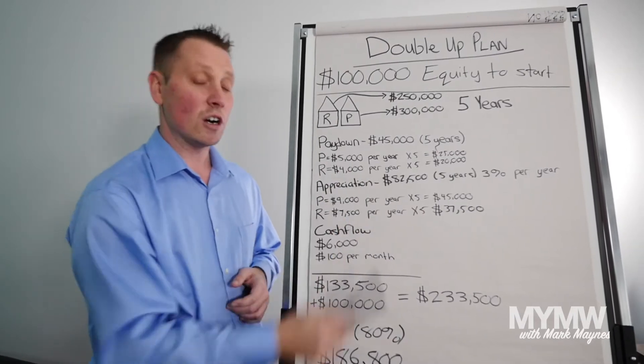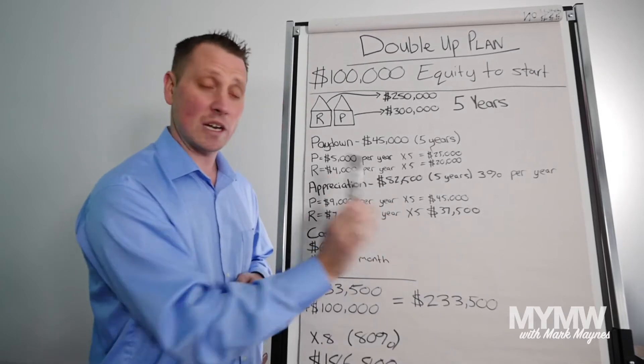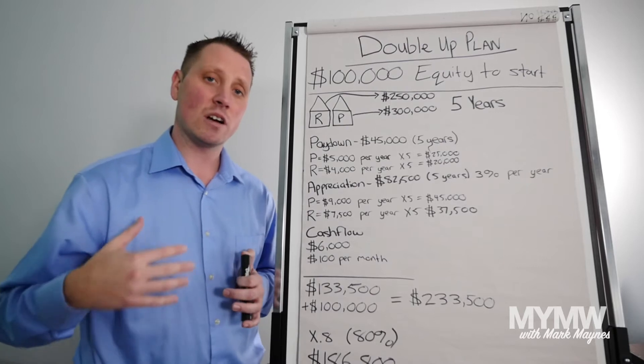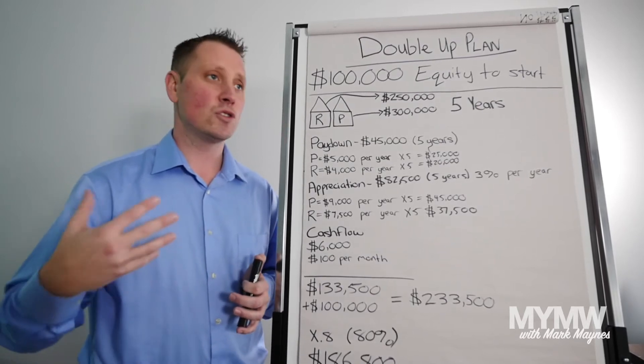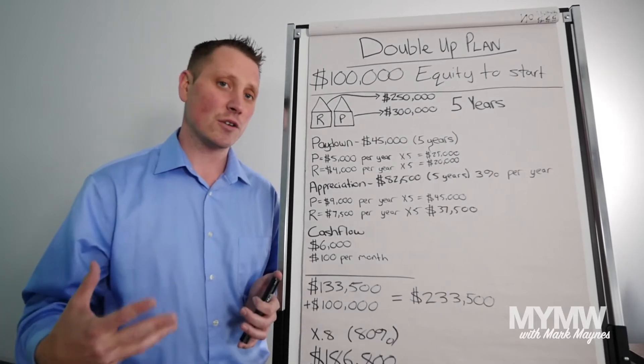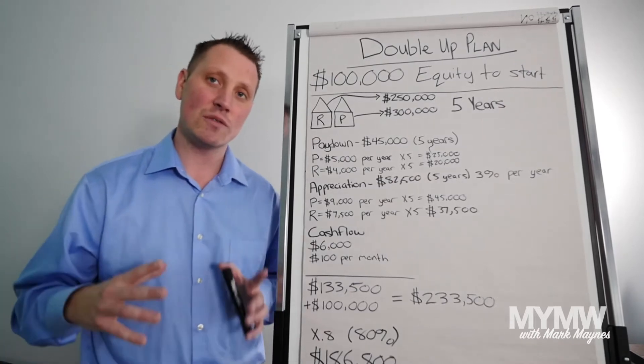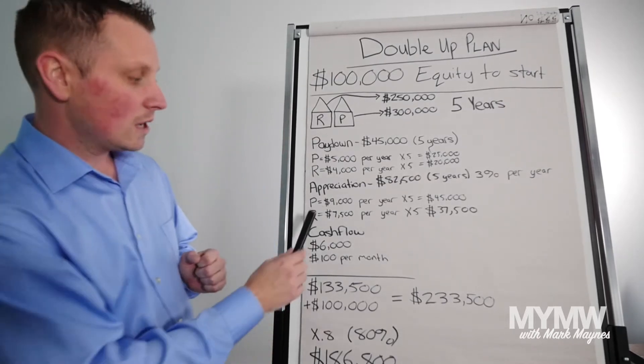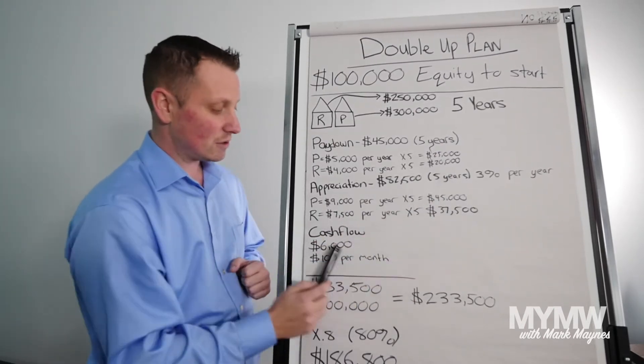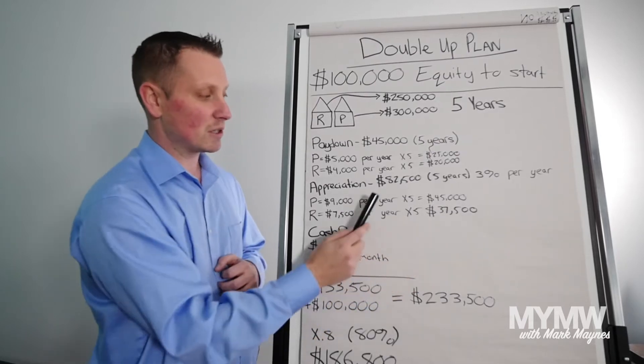Your appreciation on two houses versus one is going to be $82,500. And I'm only going at 3% per year. Again, I am strictly talking about the London market. We have seen 2 to 4% as a very simple benchmark. So to say under 3% is very unlikely. I'm giving very conservative numbers on this whole thing. So how we got that: $9,000 a year on your personal is $45,000, $7,500 a year on your rental is $37,500, which brings us to $82,500.